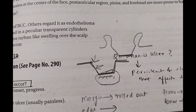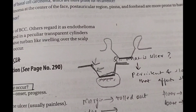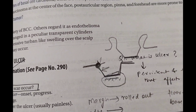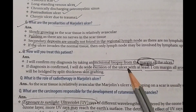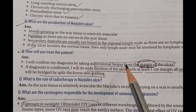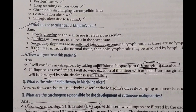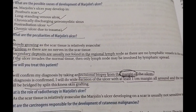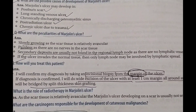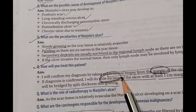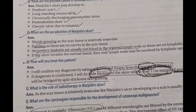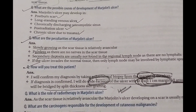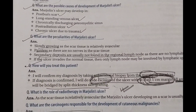For investigations, we perform an incisional biopsy from the margin of the ulcer. Once Marjolein's Ulcer is confirmed, the treatment is wide excision of the ulcer with at least one centimeter margin all around, and the resulting defect is bridged by split thickness skin grafting.